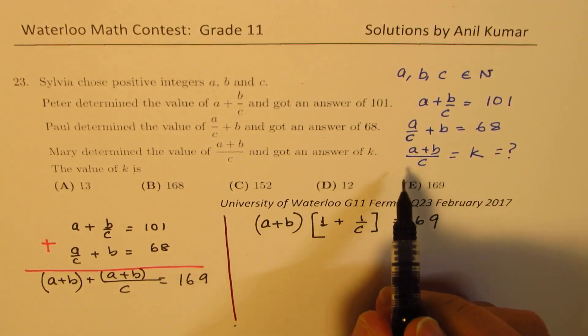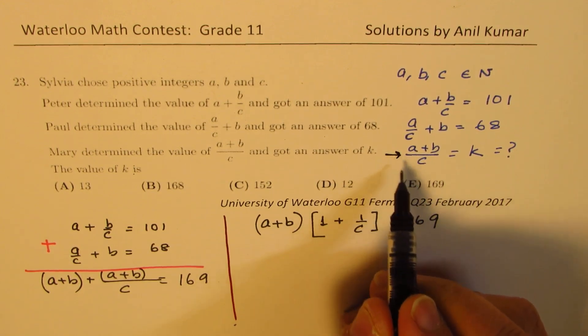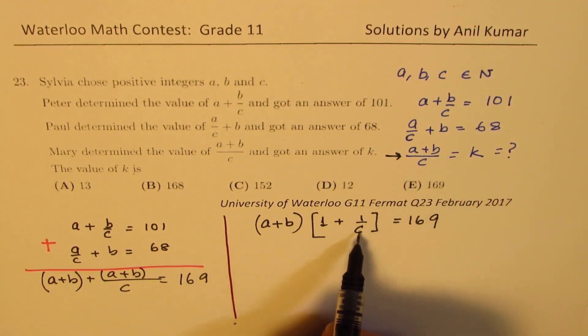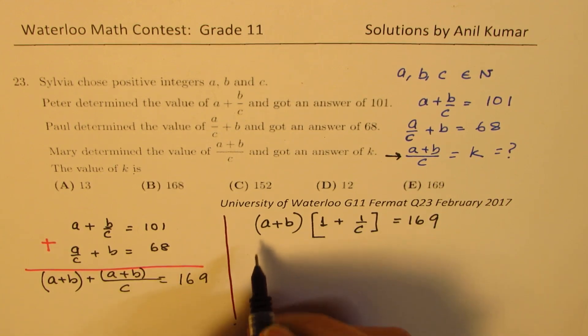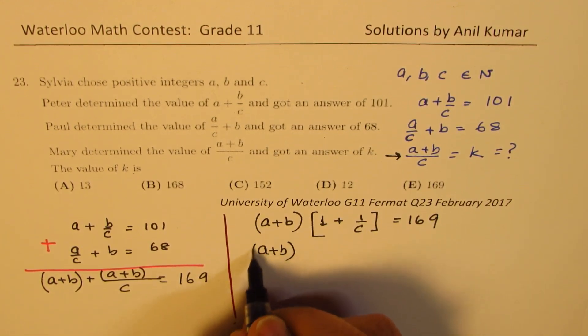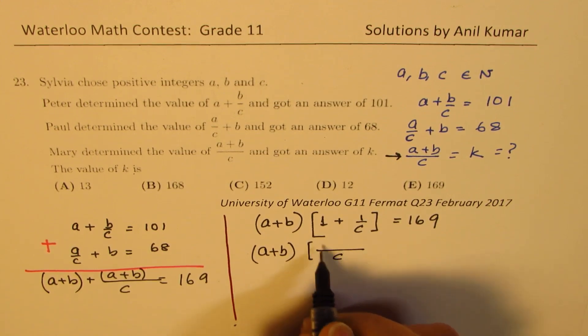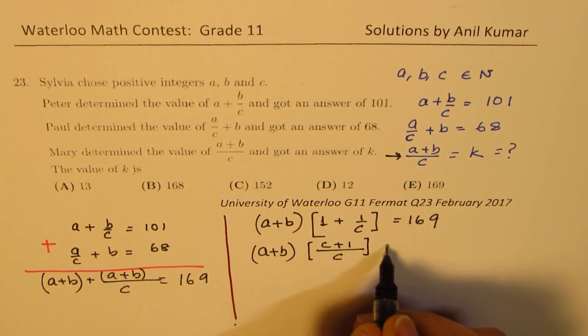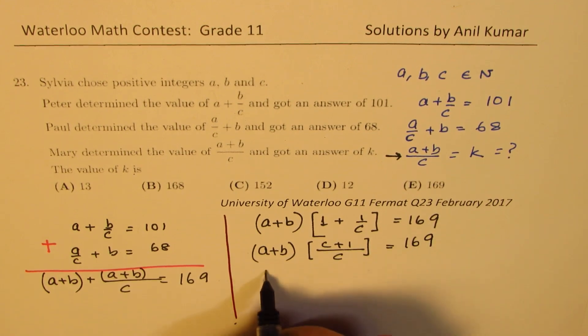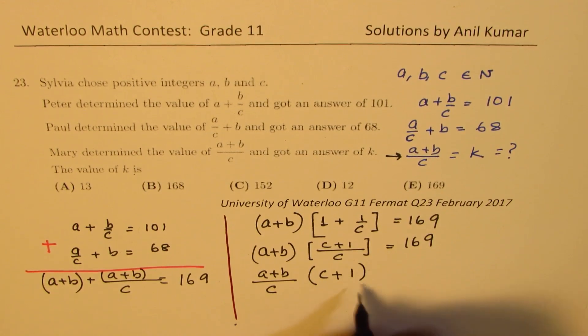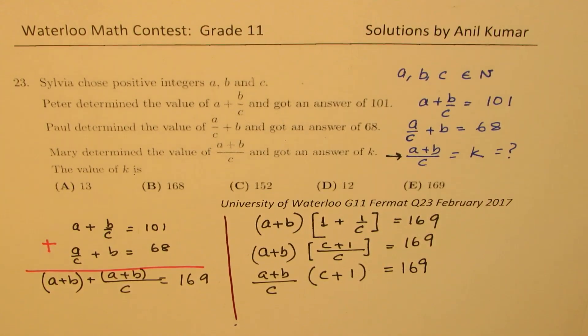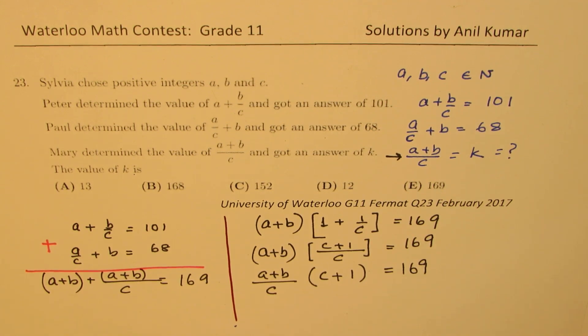Now we are interested in finding what this number is, which is A plus B over C. So from here, that C we could also take out. We'll take C as a common factor. So we get C plus 1 equals to 169 over A plus B over C. And here we have C plus 1 and that is 169. So we get equation in the form of factors. And we know the product is 169.